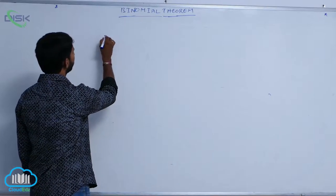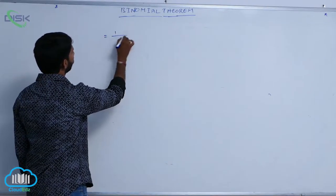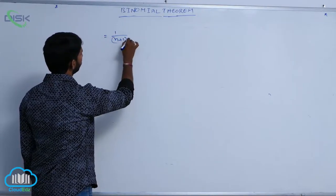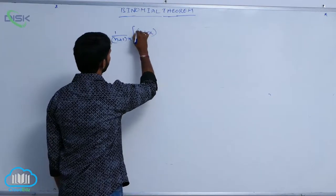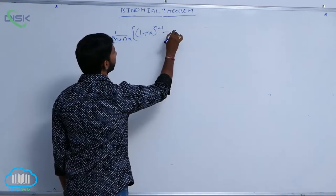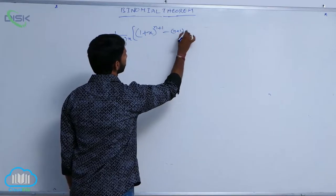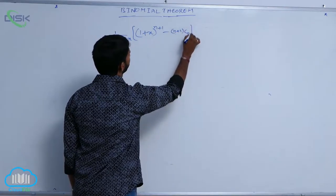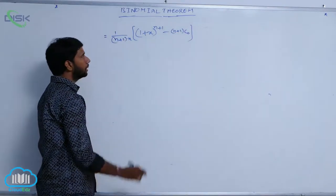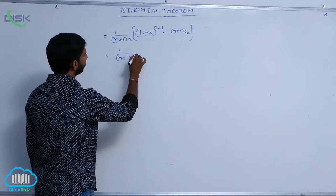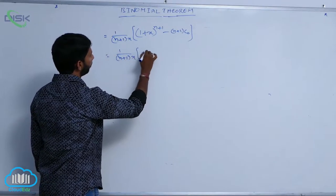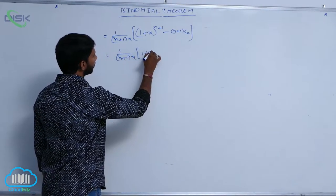Using the (1+x)^n form: (1+x)^(n+1) minus (n+1)C₀, divided by (n+1)x. Since (n+1)C₀ equals 1, this simplifies accordingly. Therefore, the expression (1+x)^(n+1) minus (n+1)C₀ all divided by (n+1)x gives us the right-hand side of the identity.